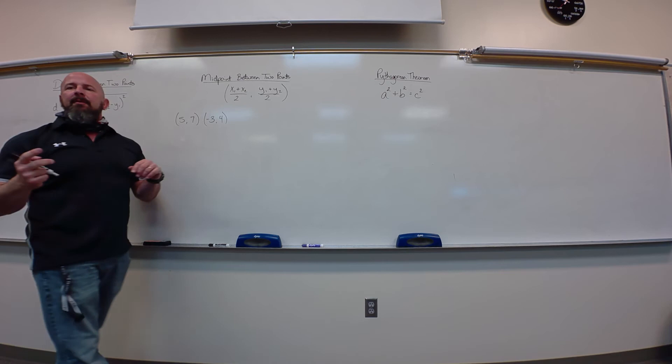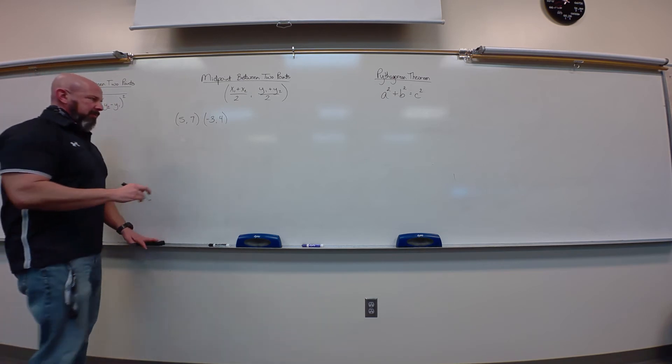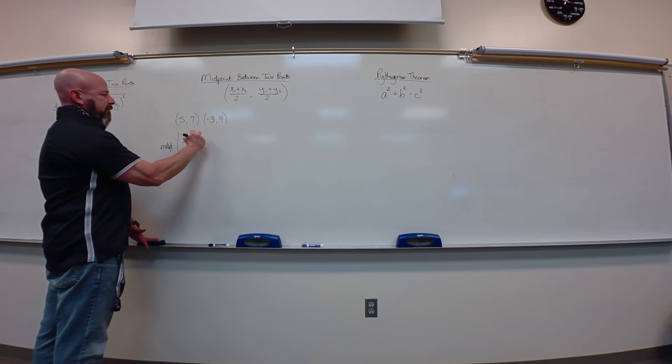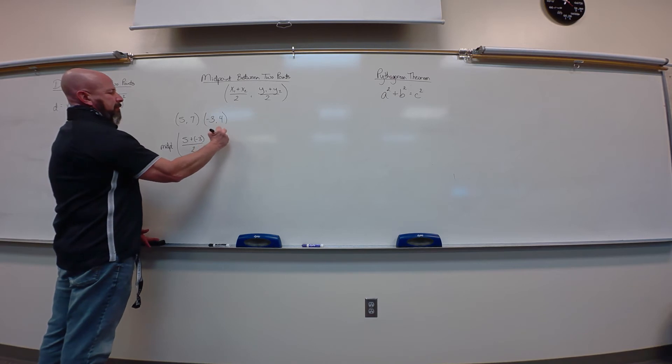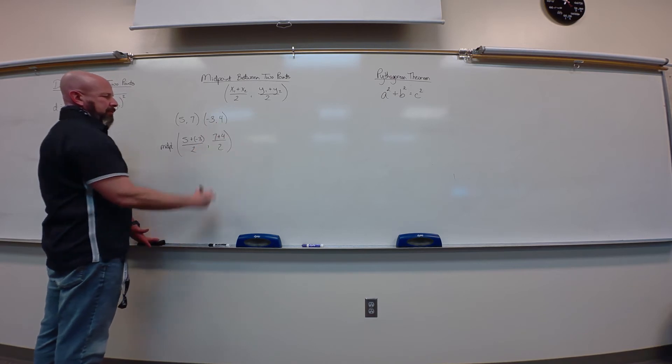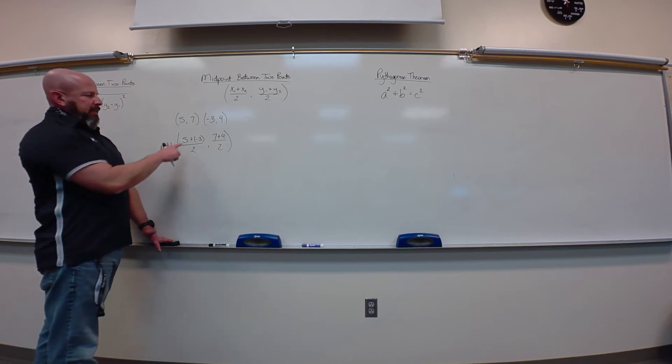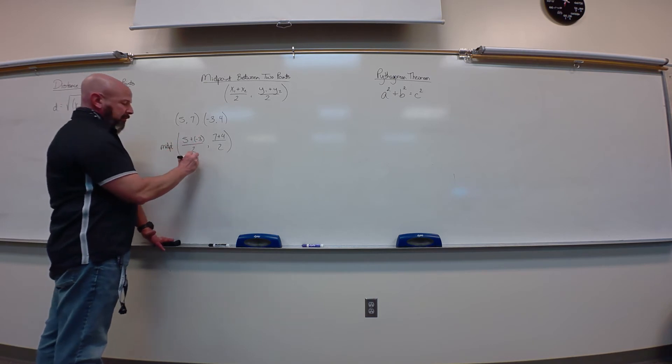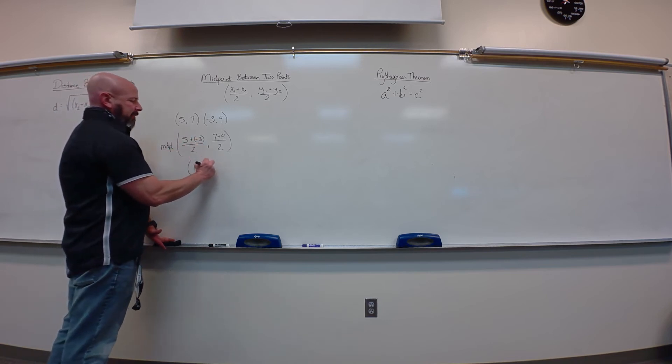So, my midpoint would be five plus negative three, sum of my x's over two, seven plus four, over two, sum of my y's over two. So, let's see, not negative five, positive five plus negative three is two, two over two is one, and then I've got 11 halves.